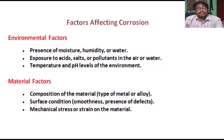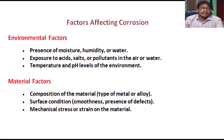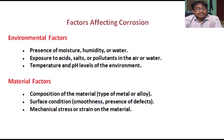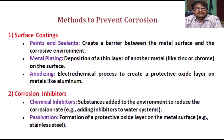Corrosion is a complex process influenced by a variety of factors. Here are some key factors that affect corrosion. Environmental factors include presence of moisture, humidity, or water; exposure to acids, salts, or pollutants in the air or water; and temperature and pH levels of the environment. Material factors include composition of the material, type of metal or alloy, surface condition, smoothness, presence of defects, and mechanical stress or strain on the material.